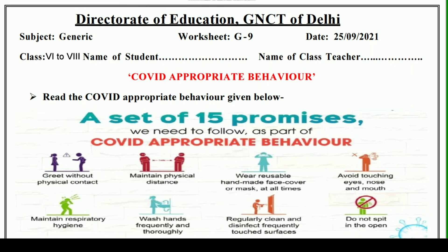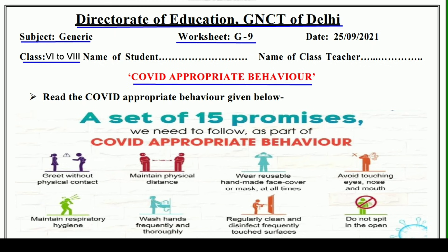Hello and welcome to Lavneesh Sarki class. This is Direct Rate of Education GNCT of Delhi's worksheet, worksheet number G9. It is only for class 6 to 8 students. It has been taken from the subject Generic English and you will have to do this work in your English notebook. Aapko ye work English notebook mein karna hai. We will learn and understand the most important COVID appropriate behavior in this worksheet. Aaj ki is worksheet mein hum COVID appropriate behavior ke baare mein janenge aur sikhenge, jis ko hum short form mein CAB bhi kehte hain. Aur aaj kal ke time mein yeh bahut zyada important hai.